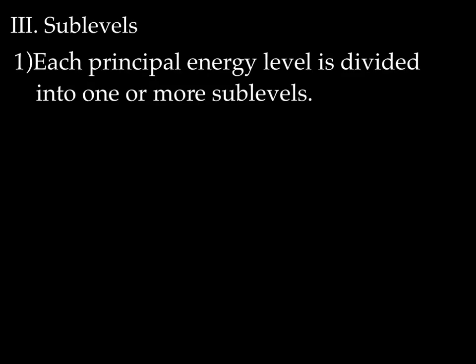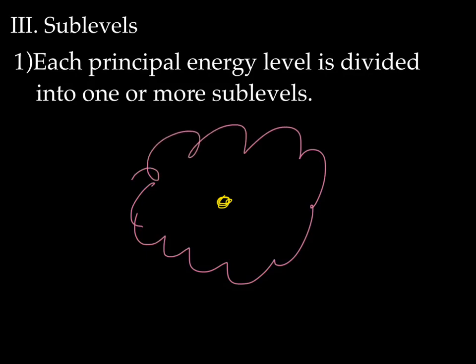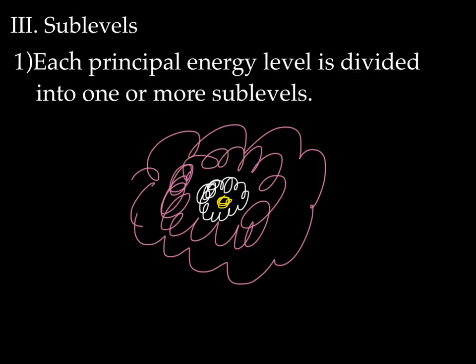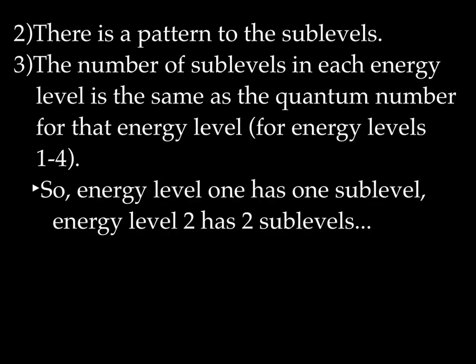There's another level of organization, and that is the sublevels. Each principal energy level is divided into one or more sublevels. So we've got the nucleus, and then if this is energy level one, we could have a sublevel here in white and a second sublevel here in pink — but they're all in energy level one. There's a pattern: the number of sublevels in each energy level is the same as the quantum number for that energy level, for energy levels one through four.